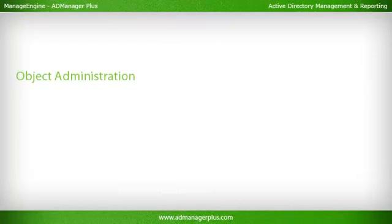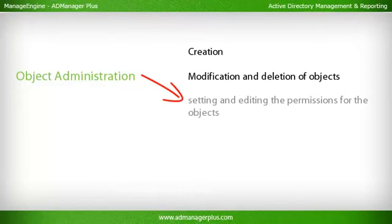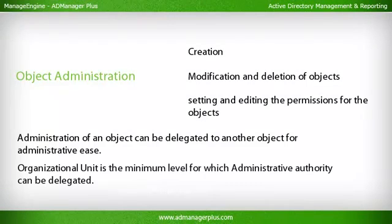Object Administration involves activities like creation, modification, and deletion of objects, as well as setting and editing permissions for objects. Administration of an object can be delegated to another object for administrative ease. The Organizational Unit is the minimum level at which administrative authority can be delegated.